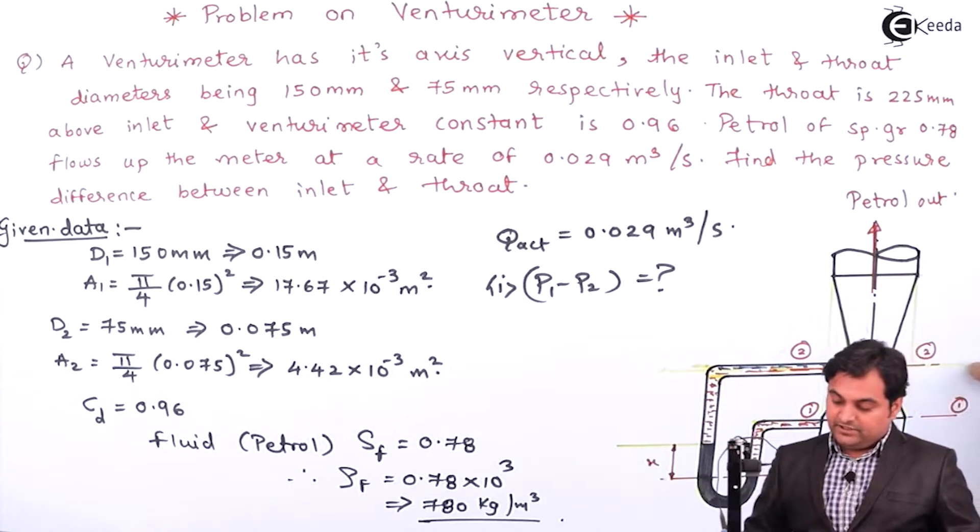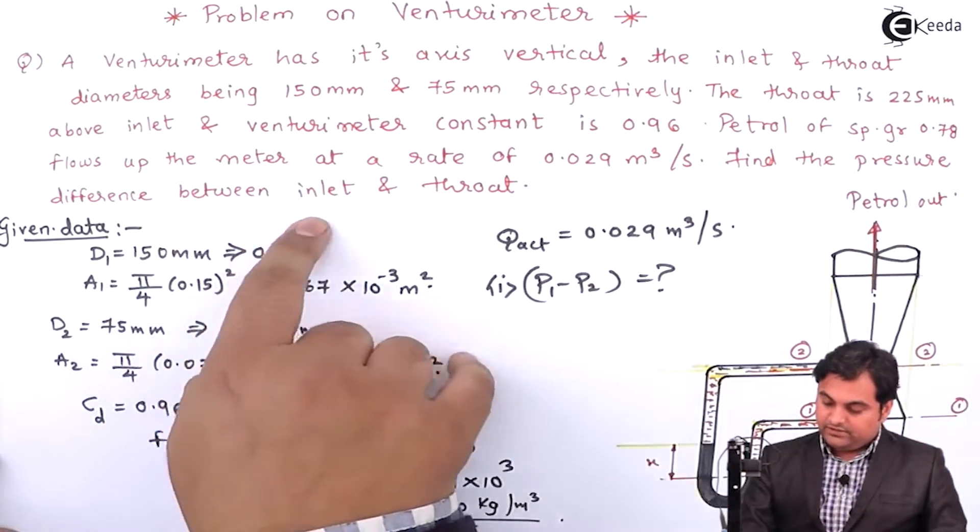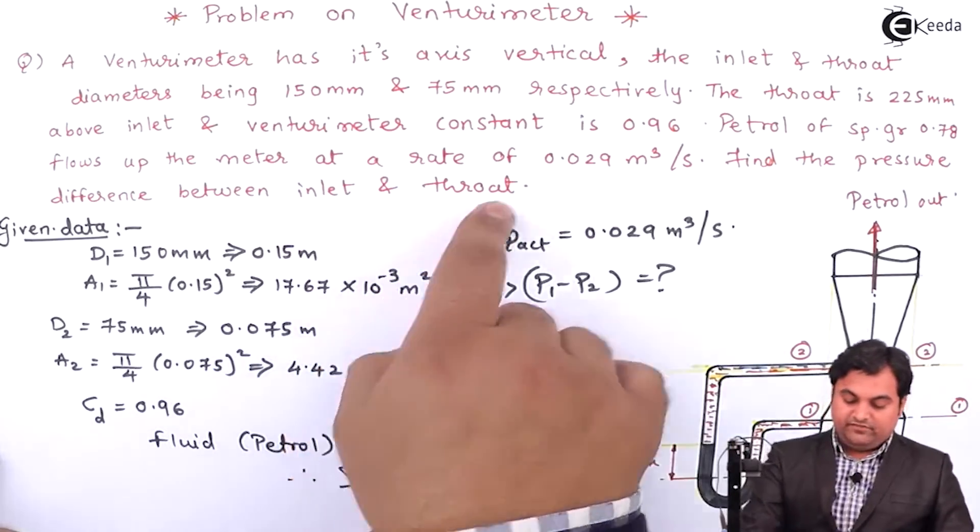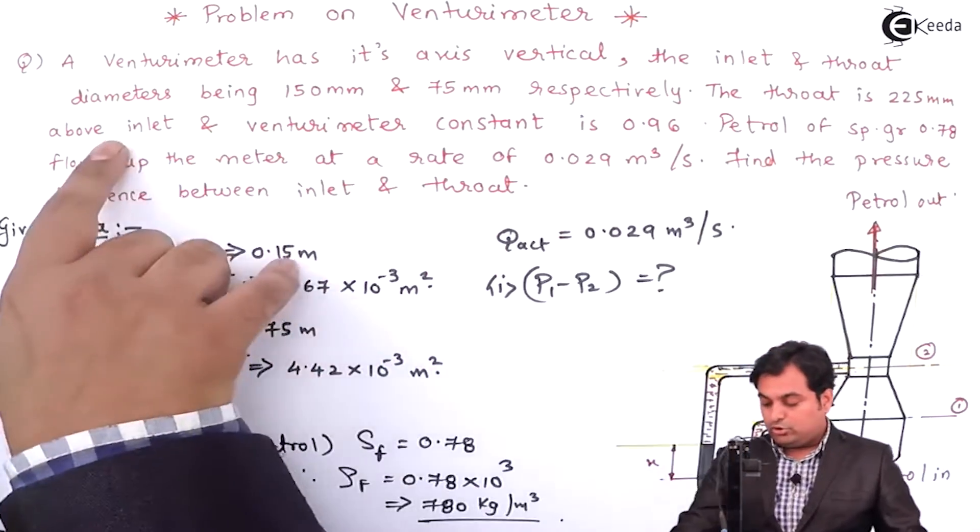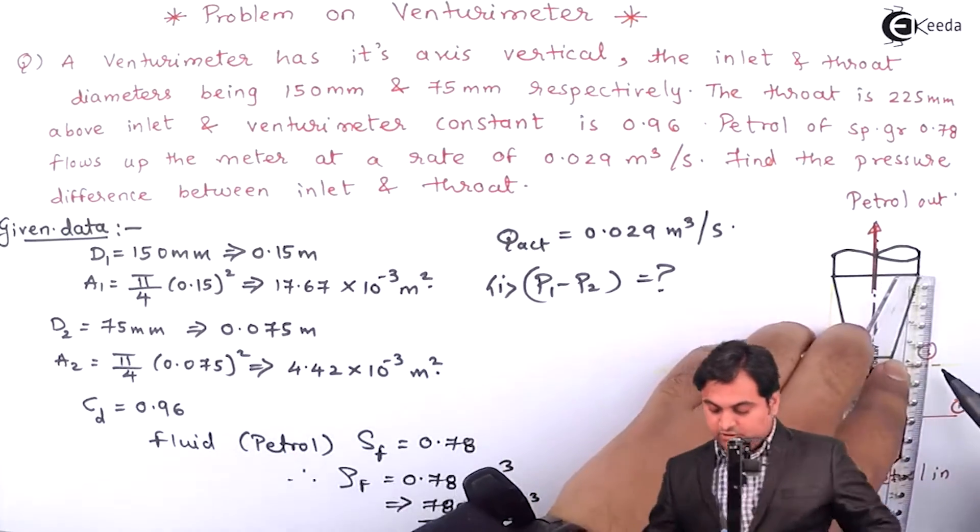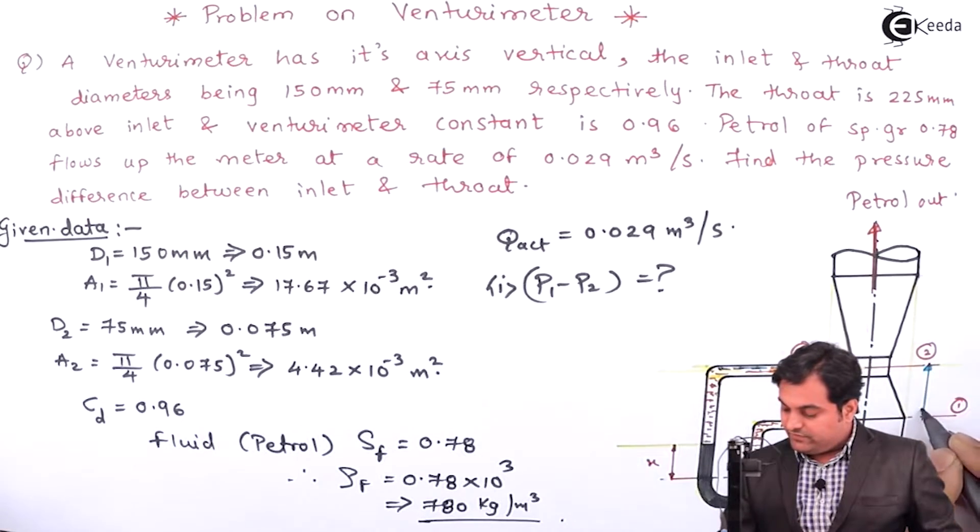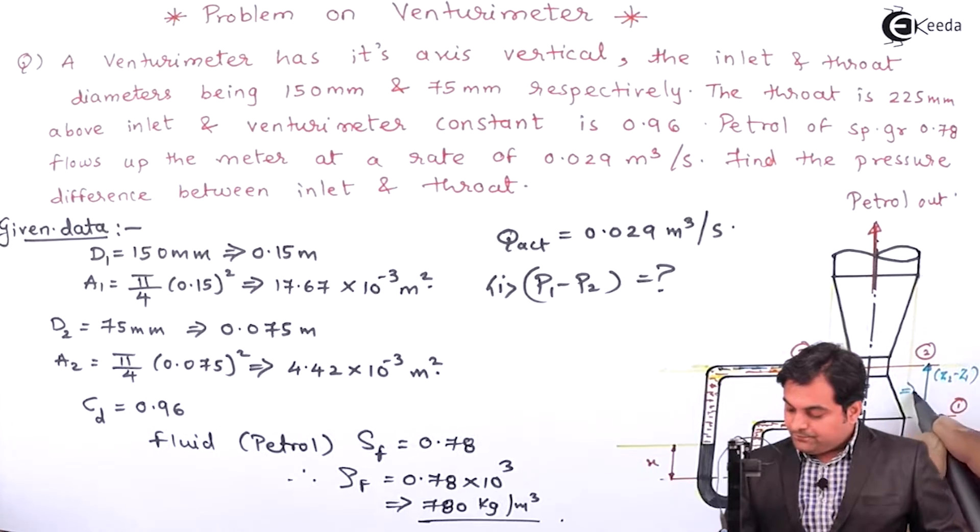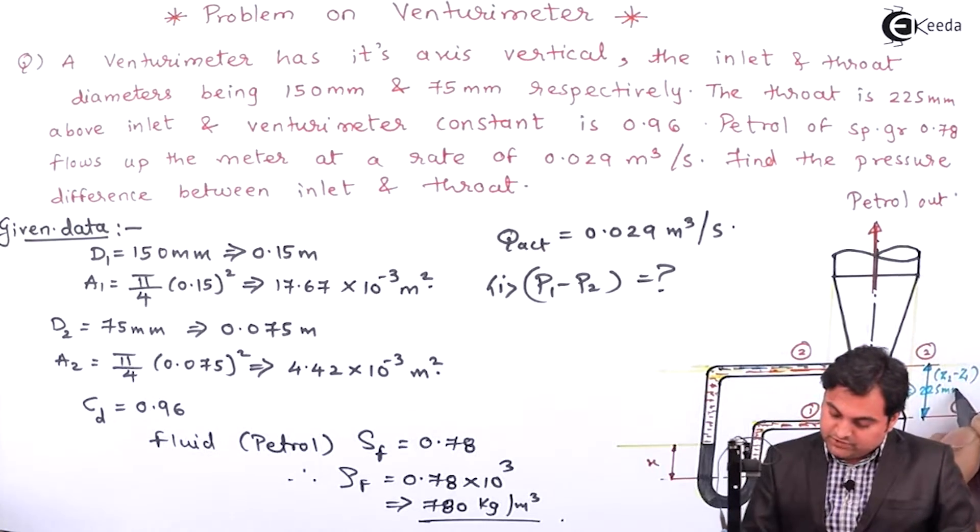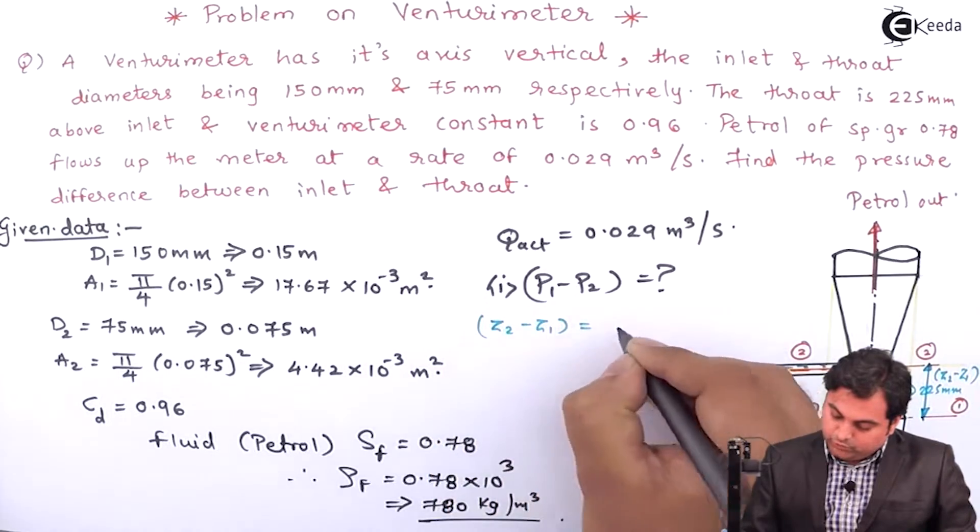They have given some height in this problem here. Find the pressure difference between inlet and at the throat. The throat is 225mm above the inlet, throat is above and that is 225mm distance. In other words, from section 1 up to section 2, the height, I will say the difference is Z2 minus Z1 which is 225mm. And when I convert this, that will be Z2 minus Z1 is 0.225 meters.